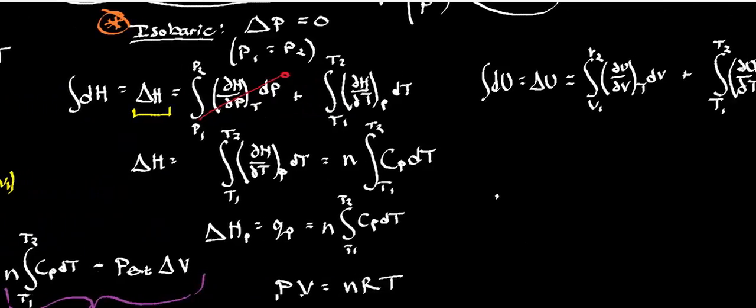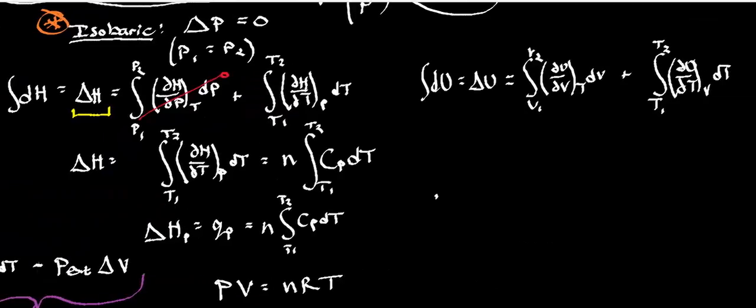Now, remember I talked about a thing in the last video called total differentials or total derivatives. This is the total derivative for delta U that you saw in the previous video. We have the partial of U with respect to V at constant T dV from V1 to V2 plus the partial of U with respect to T at constant V dT from T1 to T2. Now keep in mind here that pressure is what's constant. So that means that we have a changing volume, volume's not constant, and we have a changing temperature, temperature's not constant.